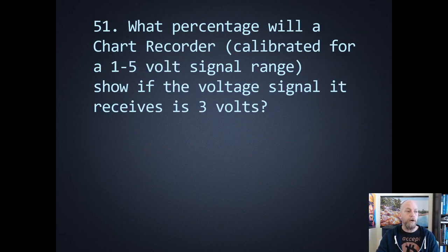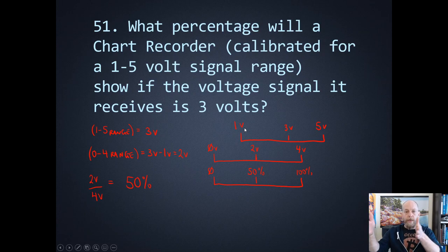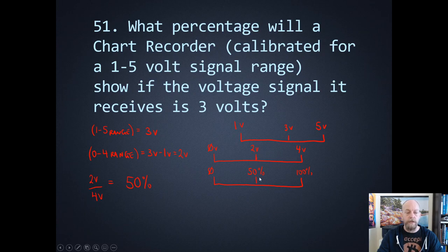Number fifty-one: what percentage of a chart recorder calibrated for a 1 to 5 volt signal range will show if the voltage received is 3 volts? We have an elevated zero on the 1 to 5 volt range. 3 volts on a 1 to 5 volt scale — you can't just take 3 divided by 5. There are 4 equal values between 1 and 5. So 3 volts on a 1 to 5 scale is the same as 2 volts on a 0 to 4 volt scale. 2 divided by 4 gives us 50% of the range.